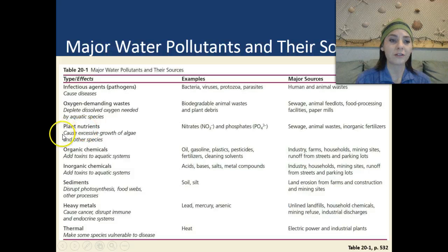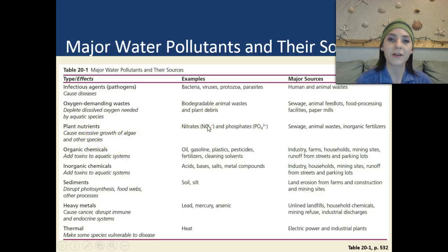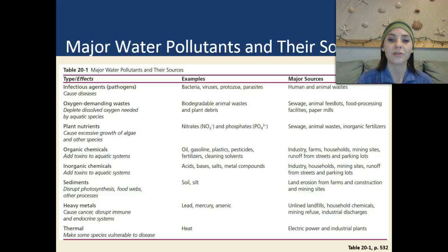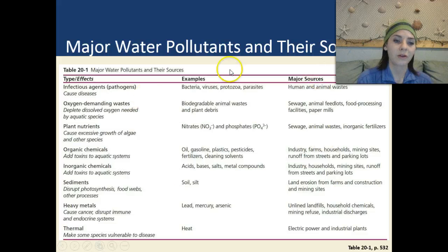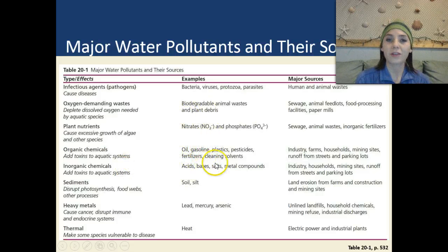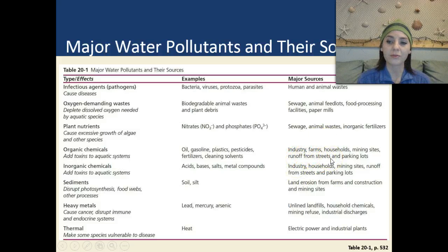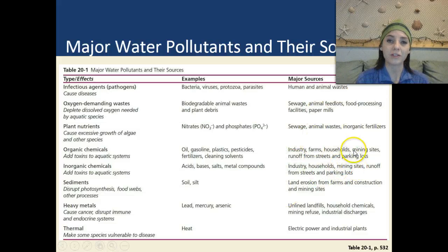We have plant nutrients, which cause excessive growth of algae and other species. Examples are nitrates and phosphates, found in sewage, animal wastes, and inorganic fertilizers — this is where you see all the runoff coming from farmlands contributing to excess nitrates and phosphates, which increase algal blooms. We also have organic chemicals, which add toxins to aquatic systems. Those can include oil, gasoline, plastics, pesticides, fertilizers, and cleaning solvents. Sources include industry, farms, households, mining sites, and runoff from streets and parking lots.